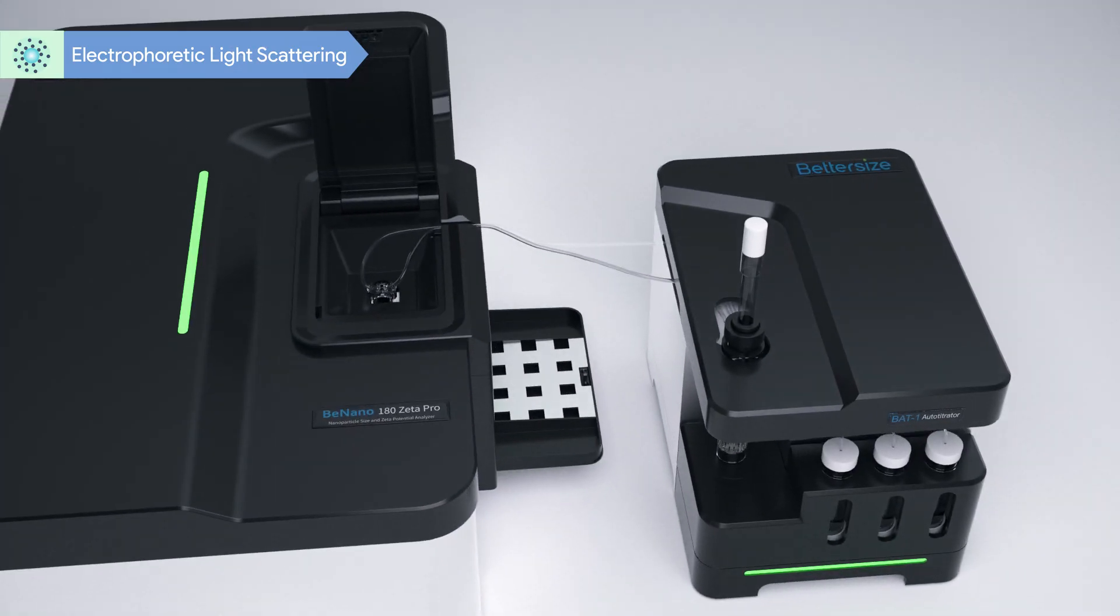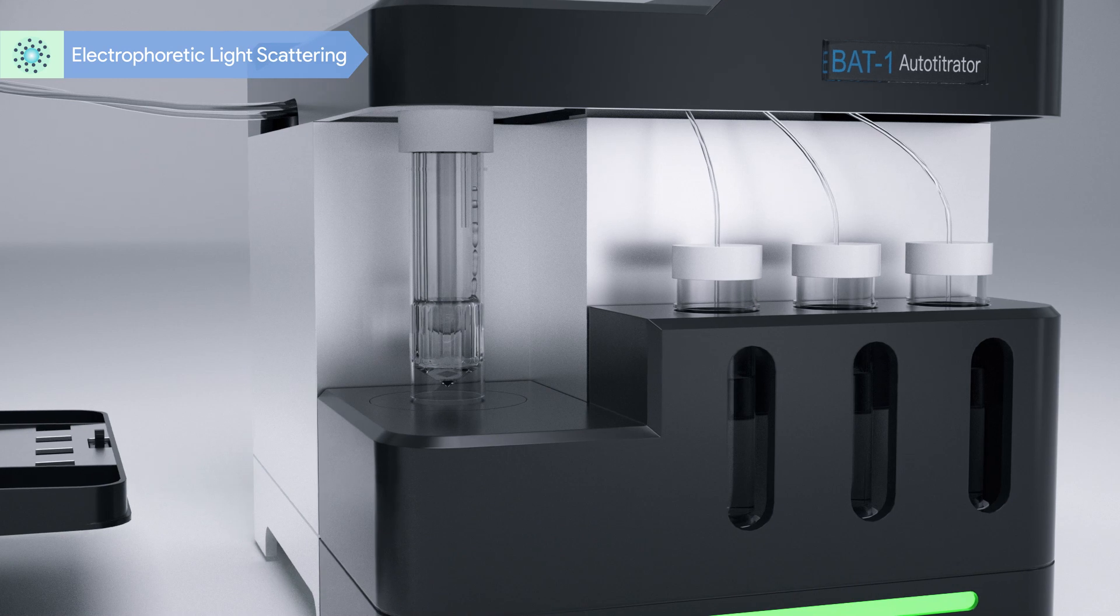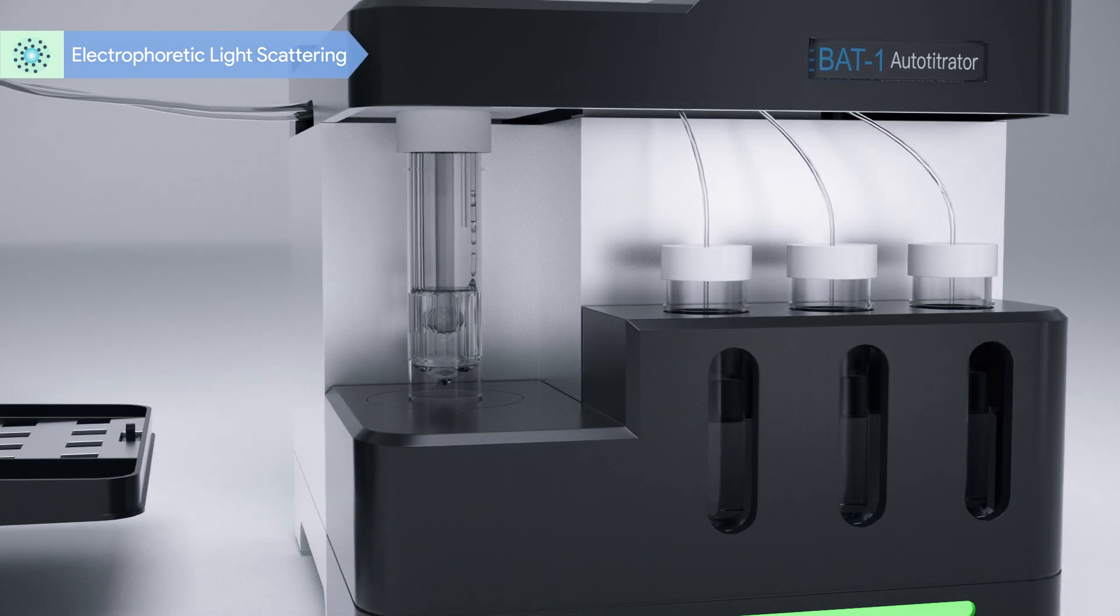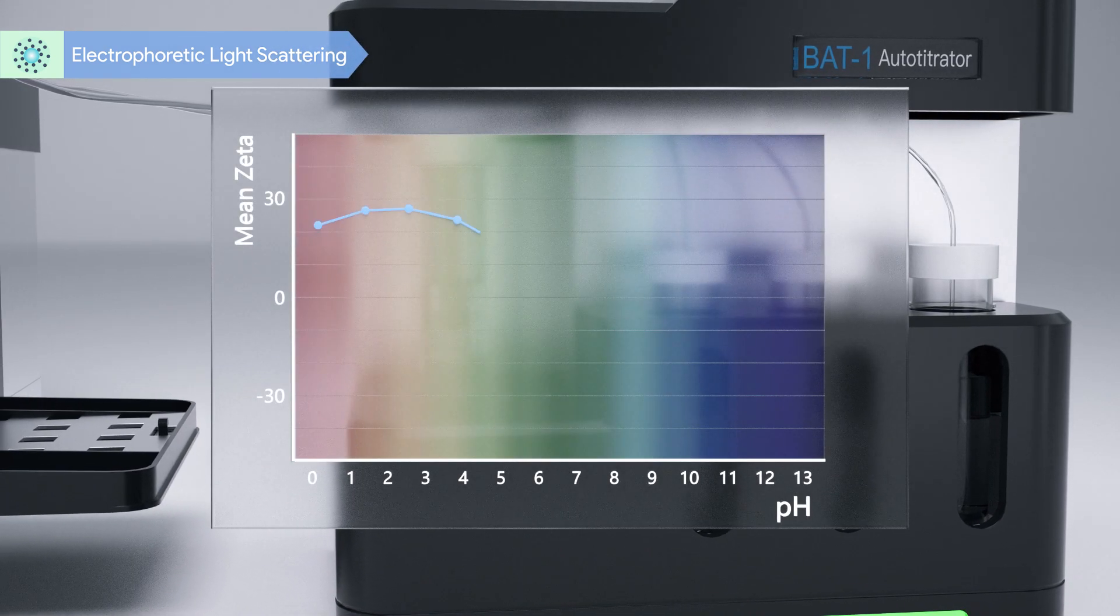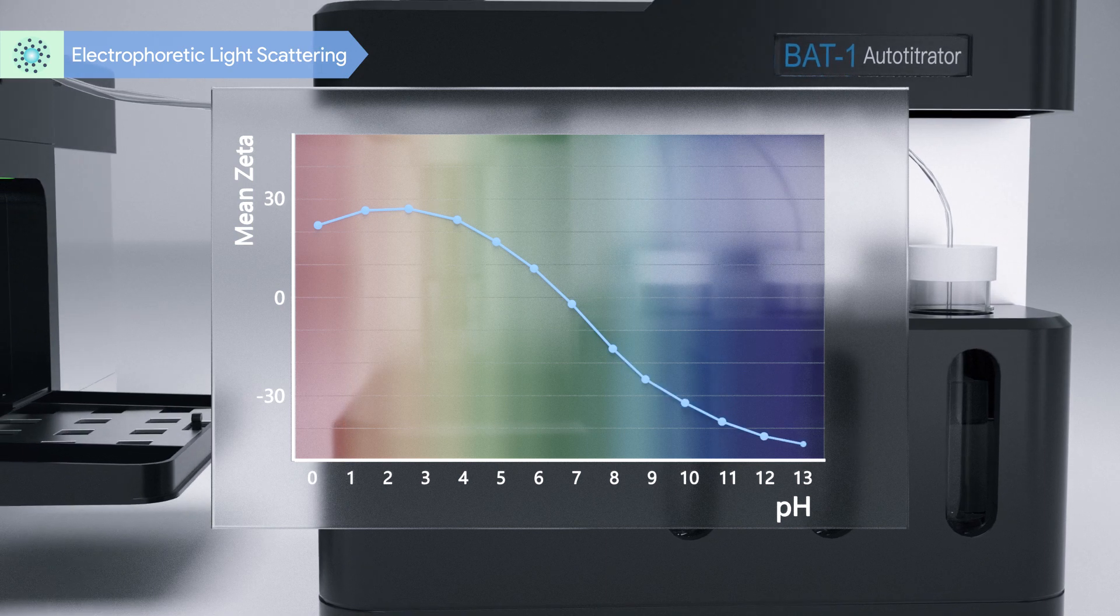The BAT1 autotitrator is designed to be used with B-Nano, performing automatic titration operation and offering a pH-dependent zeta potential plot.